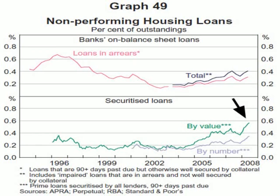It's a graph of the default rate on Australian securitised loans, and it shows a very significant uptick through 2008. It adds further weight to what I said in my first bubble for today, that securitised Australian mortgages may prove to be equivalent to US subprime.